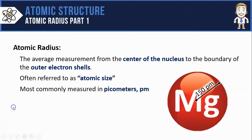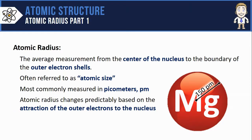Now let's get into the important stuff here. Atomic radius will change predictably based on the attraction of the outer electrons to the nucleus.